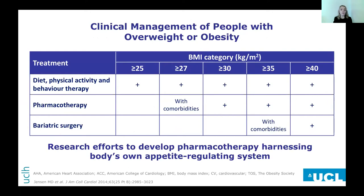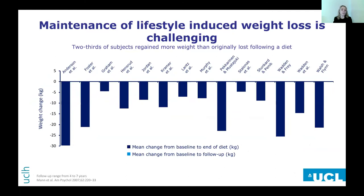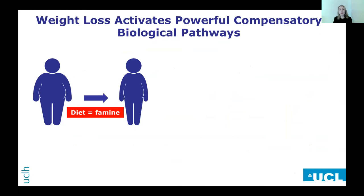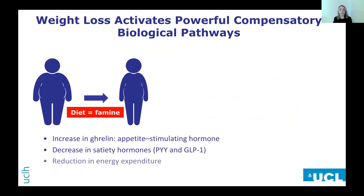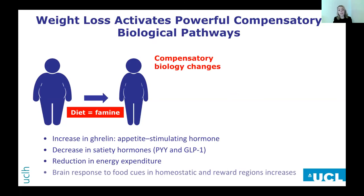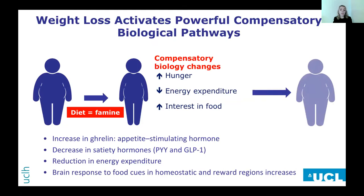What happens when a person goes on a diet? All diets, if the person sticks to them, engender weight loss. The difficulty is maintaining that weight loss — the vast majority of people will put weight back on over four to seven years. As soon as a person goes on a diet, there's an increase in ghrelin — the hunger hormone — a reduction in satiety hormones, a reduction in energy expenditure, and brain imaging shows a change in how the brain responds to food cues. These compensatory biological changes underlie the reason why most people regain the weight they've lost.